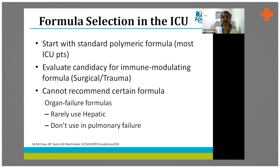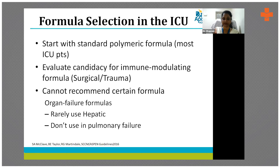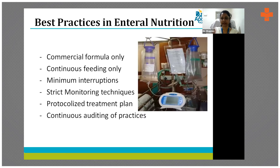For example, immunomodulating formulas are used especially for surgical and trauma cases — not for all critically ill cases. You cannot use immunomodulating formulas for general critically ill patients and cannot routinely recommend hepatic or pulmonary failure-specific products. For a patient with hepatic encephalopathy during the acute phase, I put them on a hepatic branched-chain amino acid product, and once they recover, we revert to a polymeric feed. That is the safer approach and reflects our best practices.